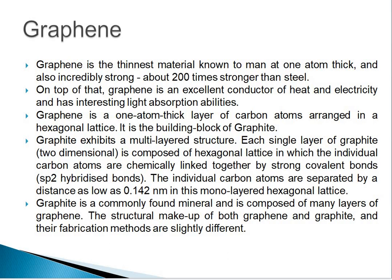Graphite exhibits a multi-layered structure. Each single layer of graphite is composed of a hexagonal lattice in which individual carbon atoms are chemically linked together by strong covalent bonds. The individual carbon atoms are separated by a distance as low as 0.142 nanometers in the monolayer hexagonal lattice. Graphite is a commonly found mineral composed of many layers of graphene. The structure and make-up of both graphene and graphite, and their fabrication methods and technology, are slightly different.